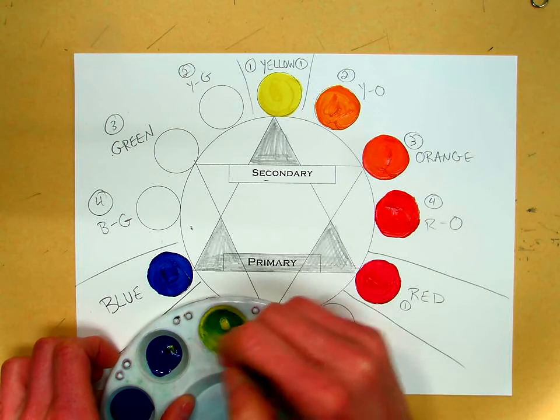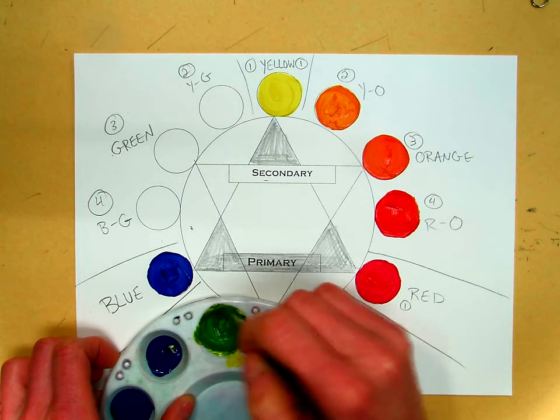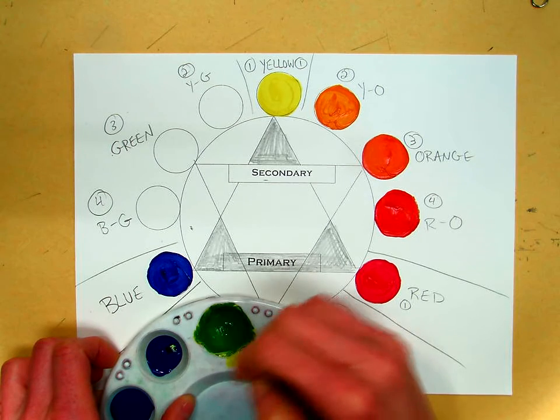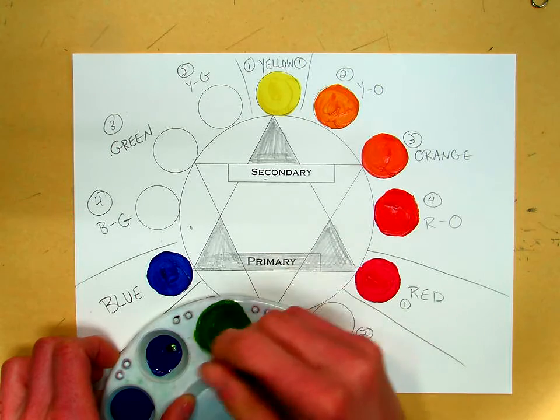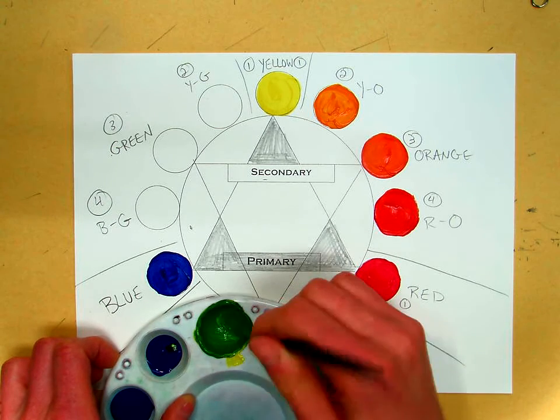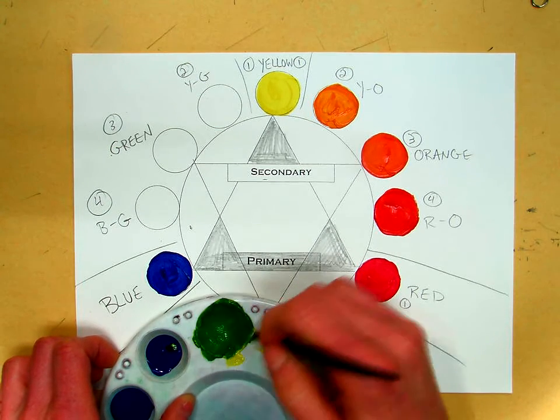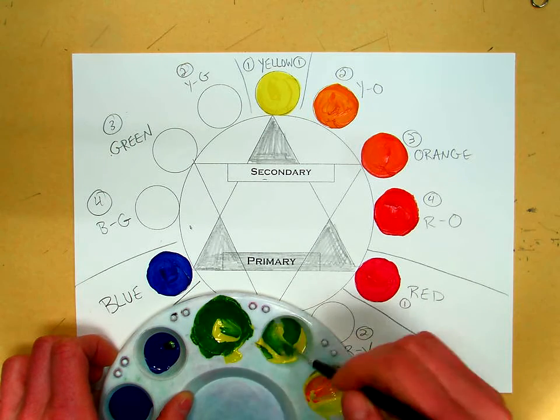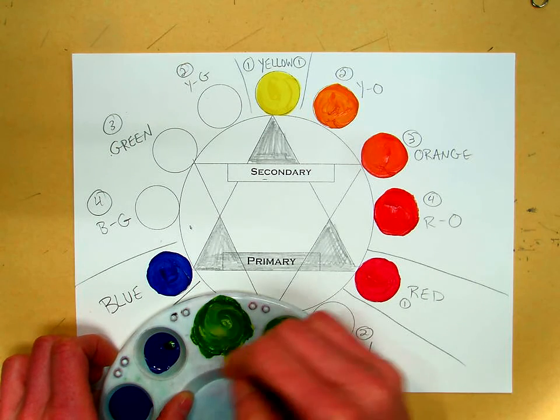If you add too little, you can always go back and add more, but if you add too much, it gets to be kind of a mess to try and change it back. And yellow-green is kind of like a lime-green color. This is a little dark, so I'm going to add a little bit more yellow, lighten it up some.